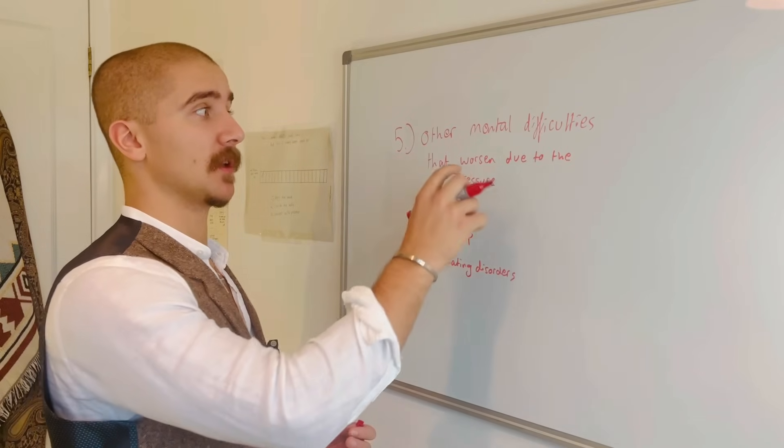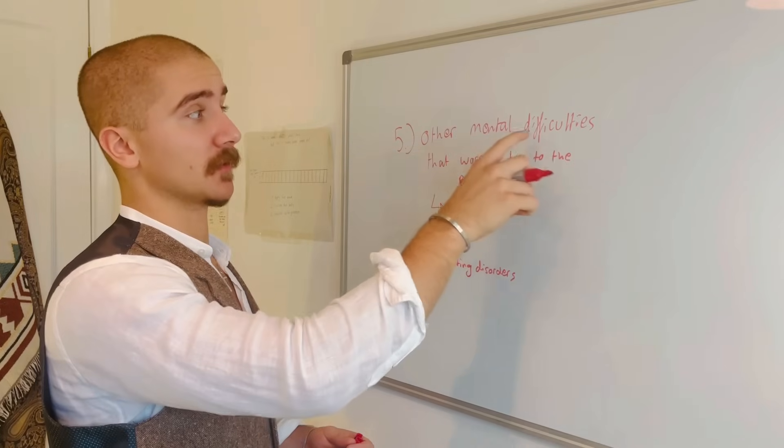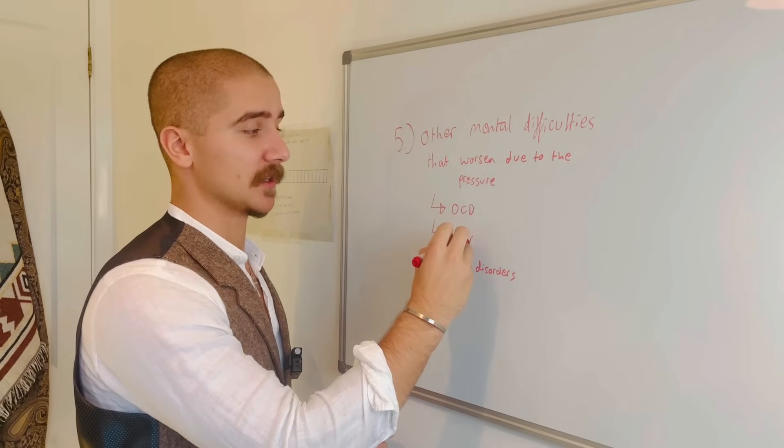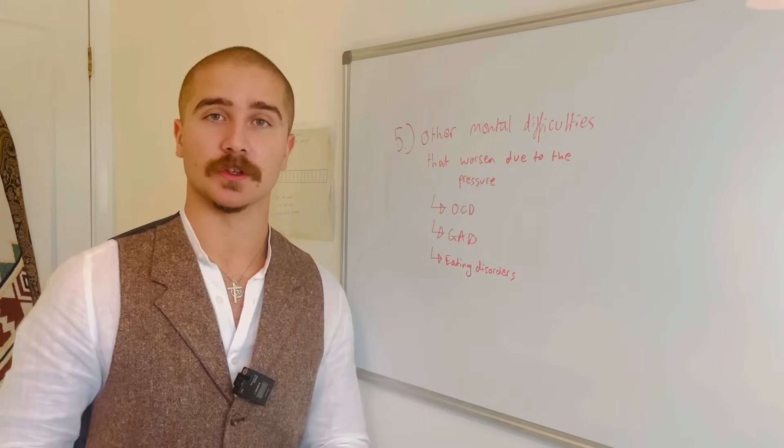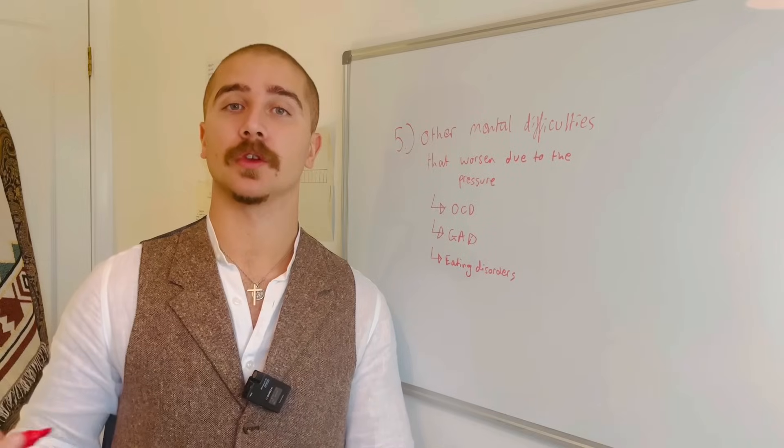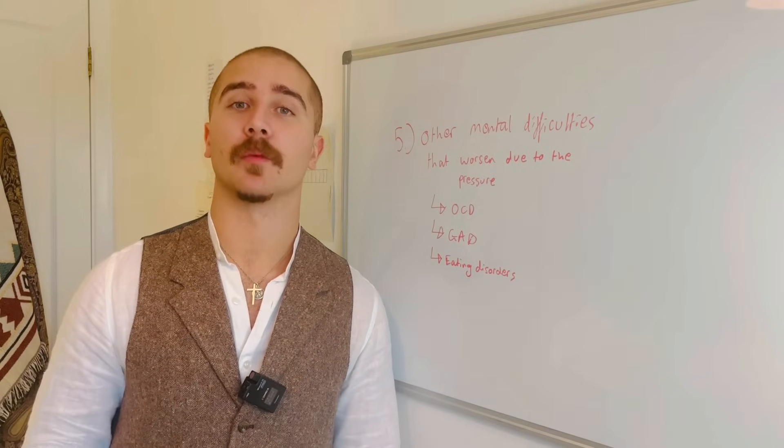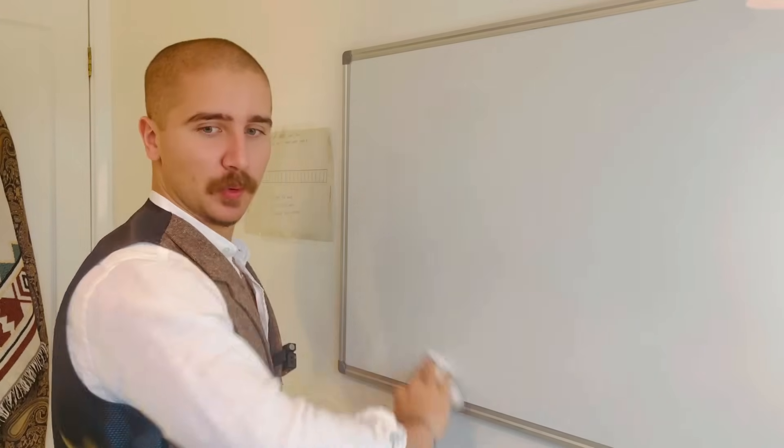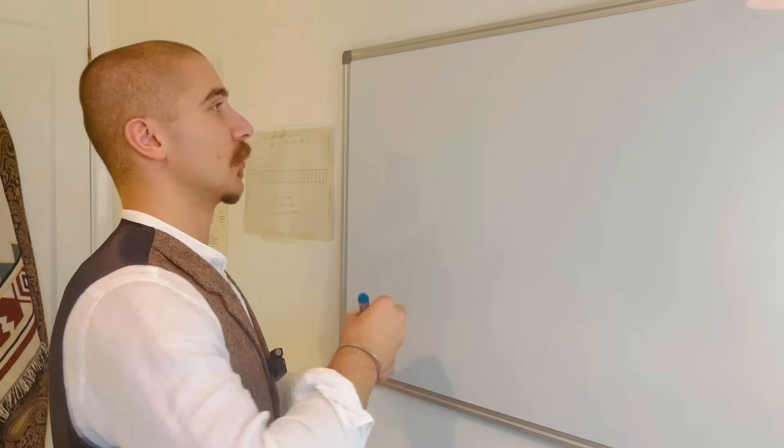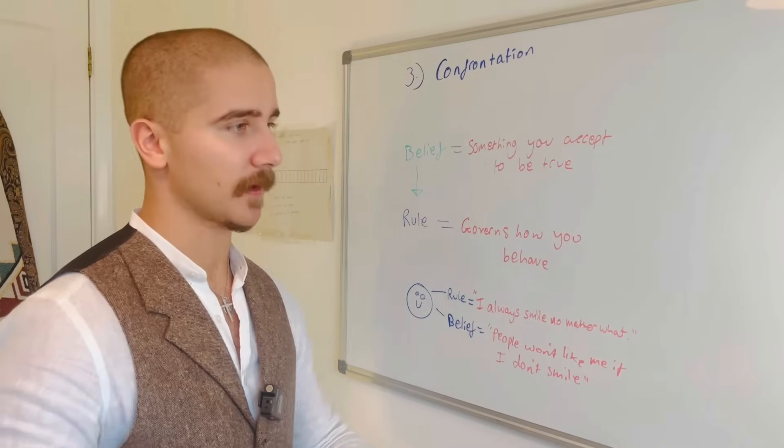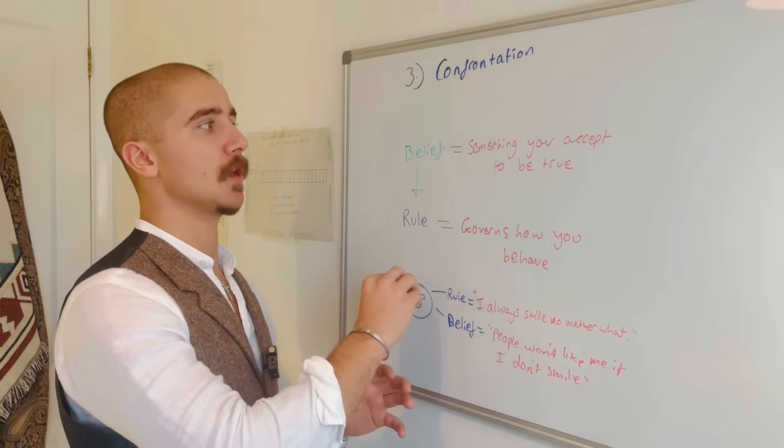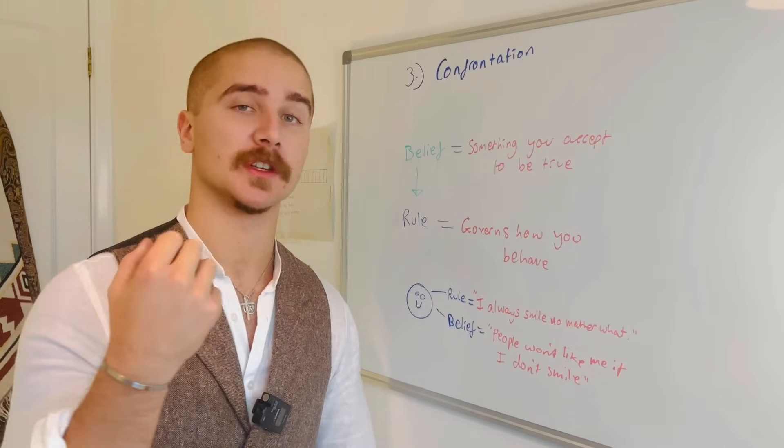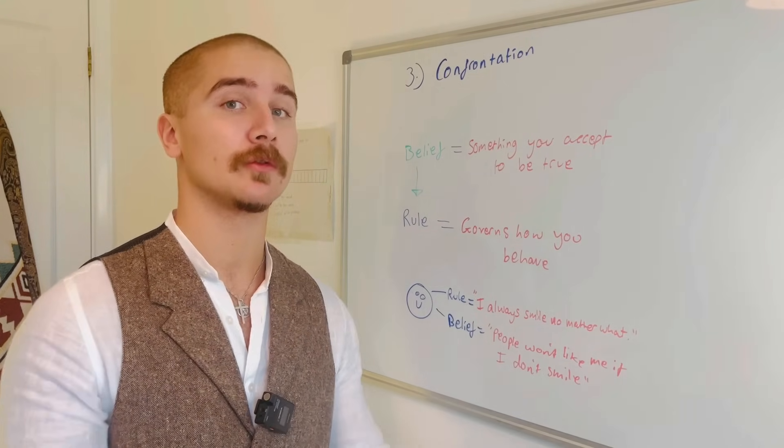And lastly, the fifth barrier to overcoming your perfectionism is other mental difficulties you might have that worsen due to the pressure. For example, OCD, generalized anxiety disorder, eating disorders. Of course, it's important to stay safe while you're healing and work with a professional if you have any other mental health difficulty. Now we've covered the barriers. Point number three in terms of conquering perfectionism is confrontation.